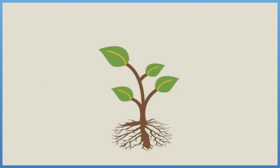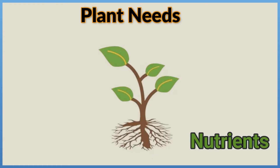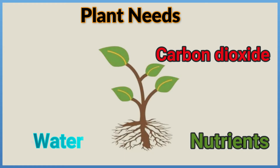Plant needs: plants need some resources to live and grow, such as nutrients, water, carbon dioxide gas — a gas found in the air — and sunlight.